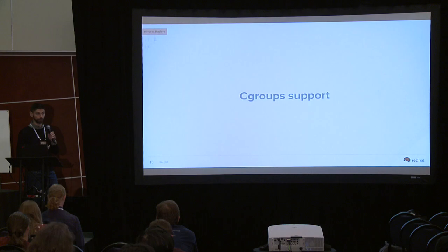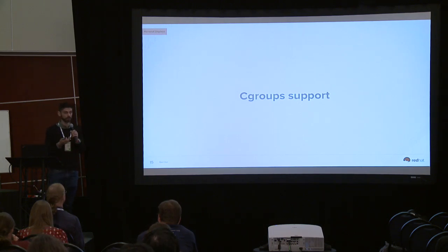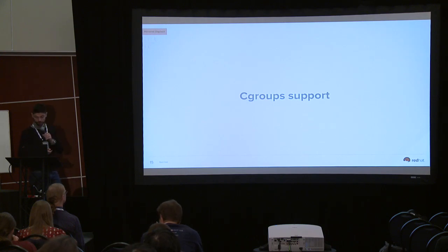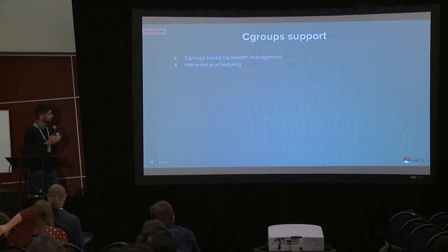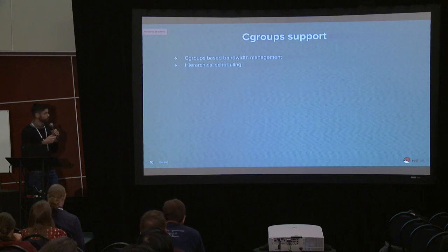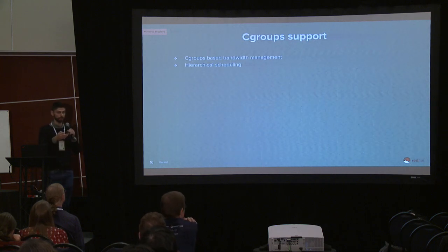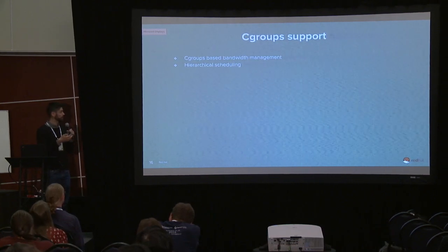That concludes the proxy execution topic. There'll be a slot in the afternoon at the RT micro conference to discuss more. The next topic is cgroup support. Currently SCHED_DEADLINE doesn't support cgroups — it only uses the syscall, giving a one-to-one association between a bandwidth reservation and a single thread. Having cgroup support might mean two different things: bandwidth management for system administrators, or actual hierarchical scheduling.